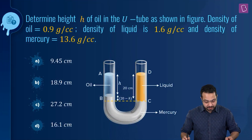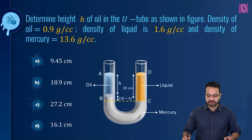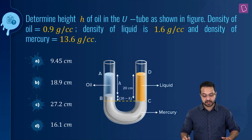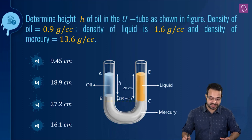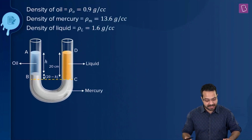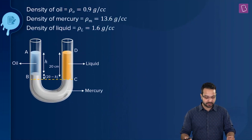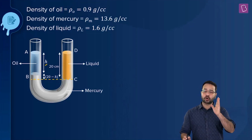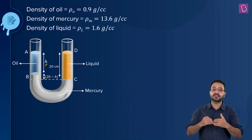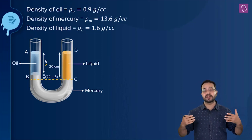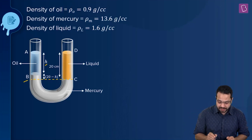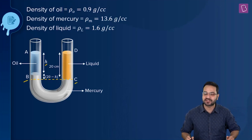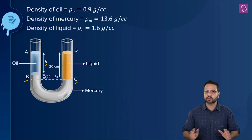Determine the height H of oil in a U-tube. Density of oil is 0.9 g/cm³, density of liquid is 1.6 g/cm³, and density of mercury is 13.6 g/cm³. Three liquids are in equilibrium. We need to find the height H of the oil column in one arm. The key concept is that inside the same liquid, pressure at the same level is equal — so pressure at B equals pressure at C.